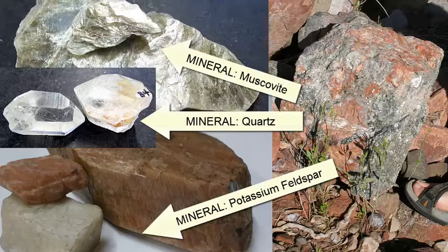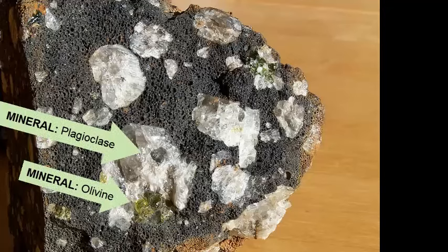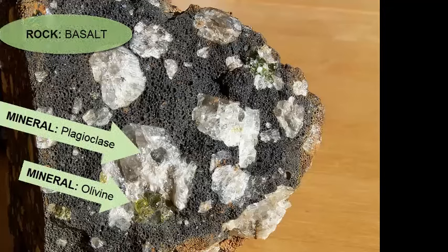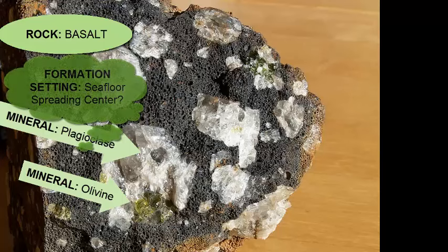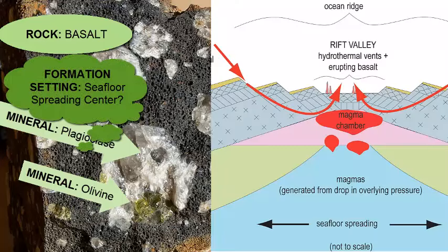Each mineral can form only if the temperature, pressure, and chemical conditions are just right, so finding a particular mineral in a rock can tell us a lot about the temperature, pressure, and chemical environment of its formation. In addition, mineral size and form, and the exact mix and proportion of minerals in a rock provide further clues and details.